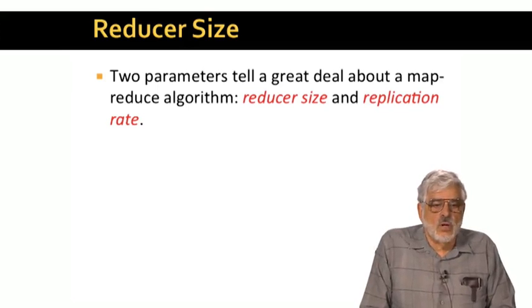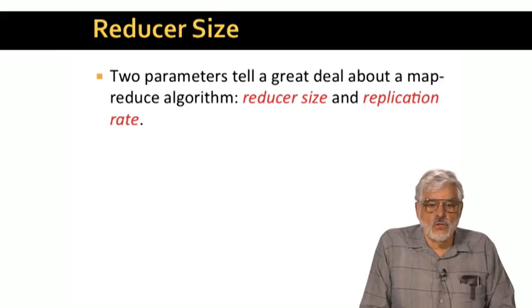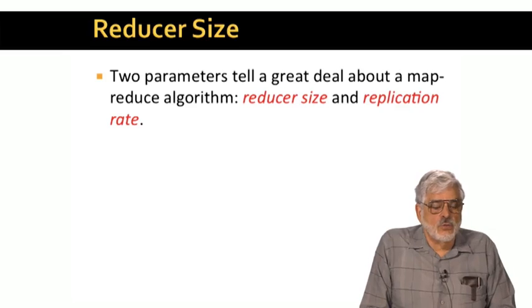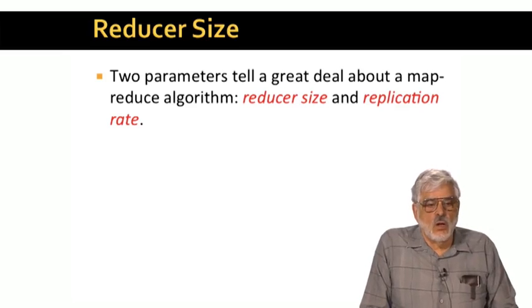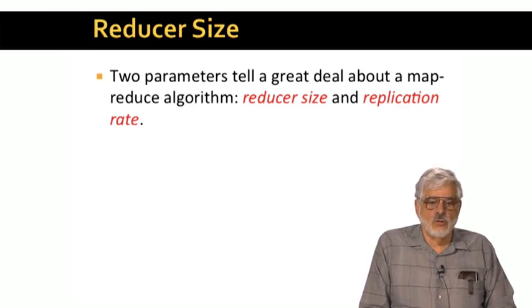Now we're going to talk about two parameters that describe a MapReduce algorithm. The first, which we'll talk about here, is the reducer size. Next we'll talk about replication rate, which is a measure of how high the communication cost is.